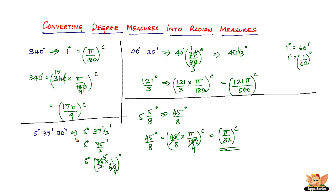First convert the seconds into minutes, then the minutes into degrees. Once you have it in degrees, if it is a mixed fraction make it an improper one. Then multiply by π/180 to get the radian measure. This concludes the video — I'll see you in the next videos with more problems based on measurement of angles.